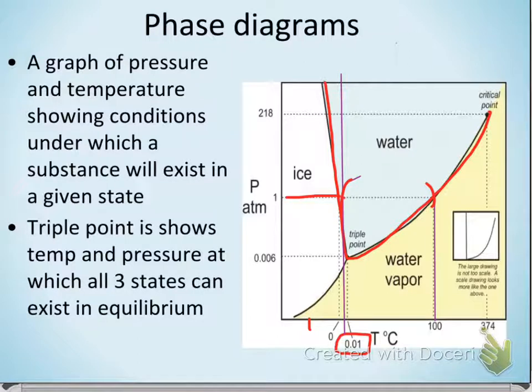As we get up to higher pressures, if we look at this line, 218 ATMs, so that's 200 times normal atmospheric pressure. What happens to the temperature that you have to get water to to make it a gas? We're looking at this line here. Does the temperature increase or decrease? It increases.